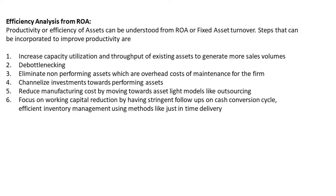Steps that firms can incorporate to improve productivity include: increasing capacity utilization and throughput of existing assets to generate more sales volume; engaging in de-bottlenecking processes to increase throughput; and eliminating non-performing assets, which are overhead costs of maintenance for the firm. Channelizing investments towards performing assets while eliminating non-performing assets go hand in hand and must be done consistently by management.